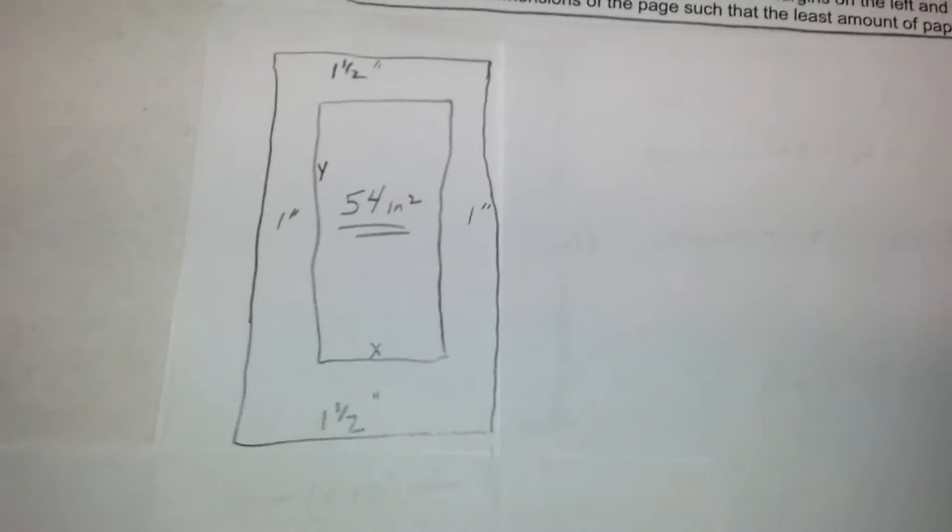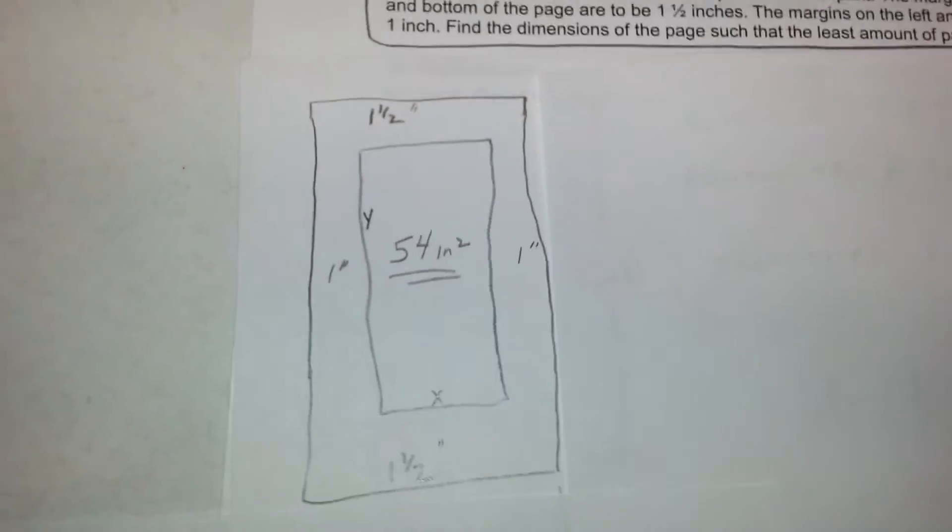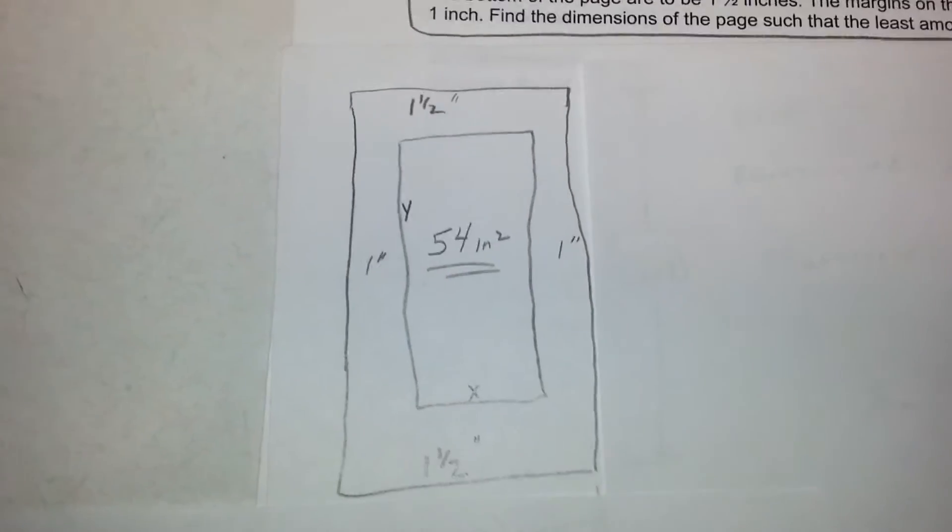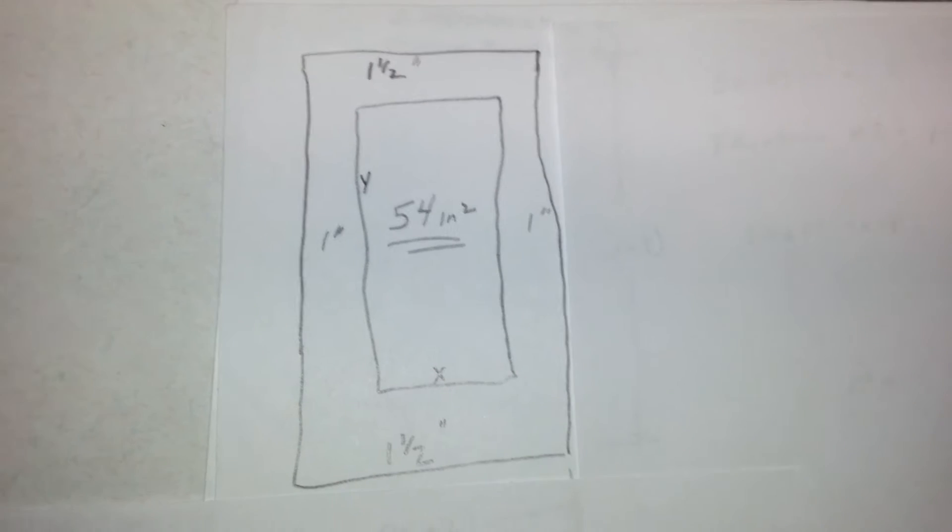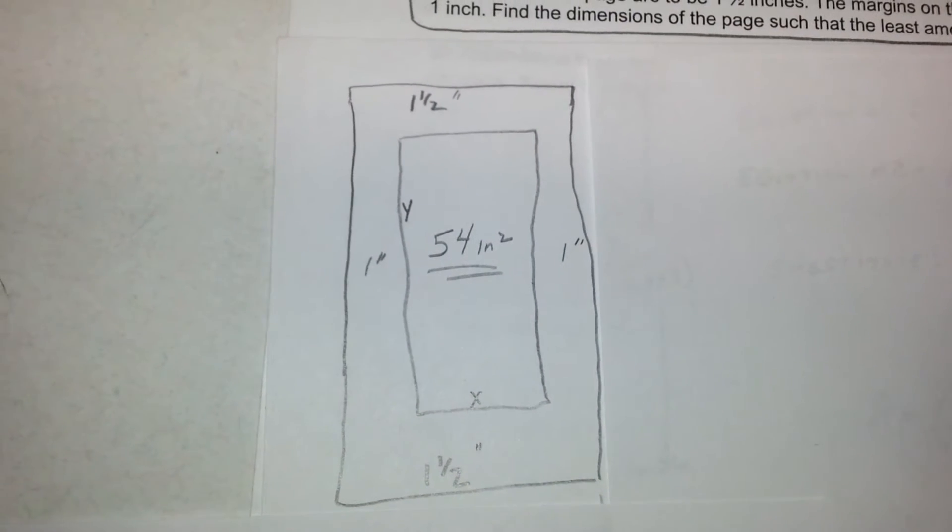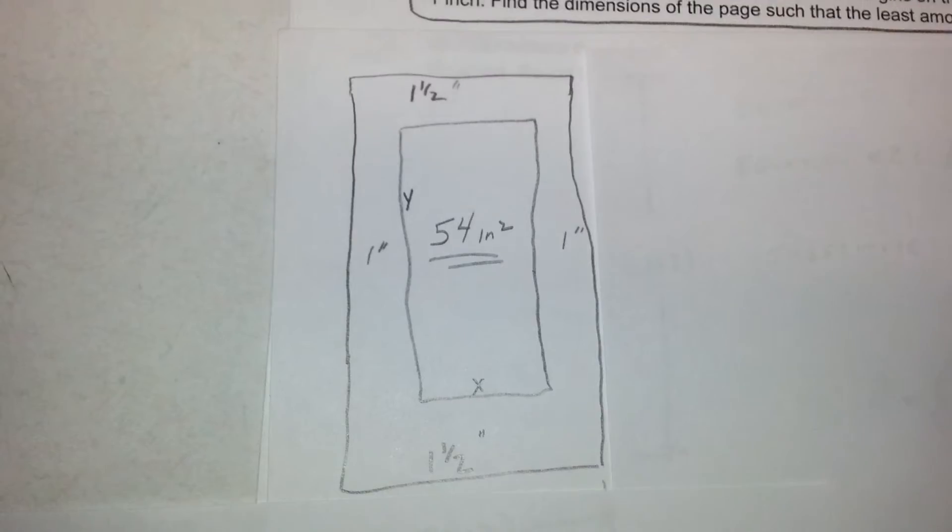So what we'll do is we'll go ahead and make a little diagram, putting in the 54 square inches of writing, one inch margin on left and right and one and a half.